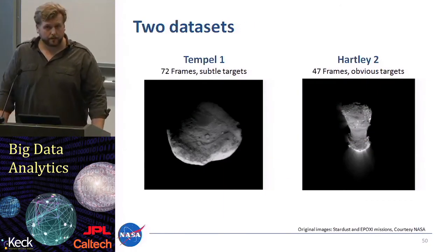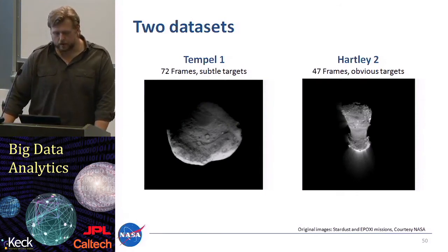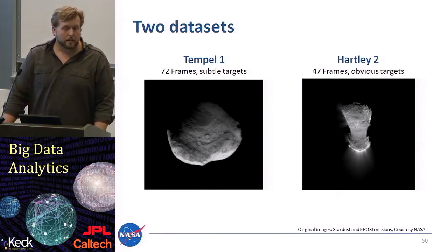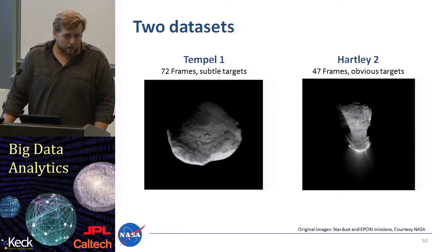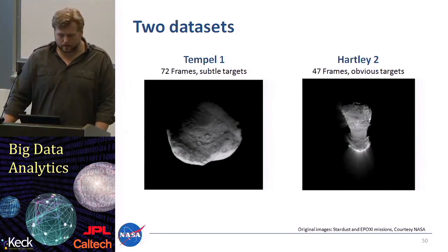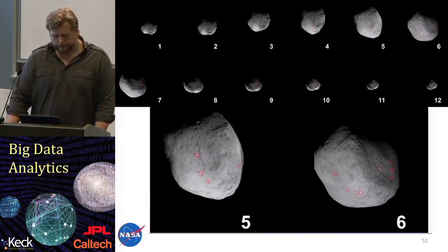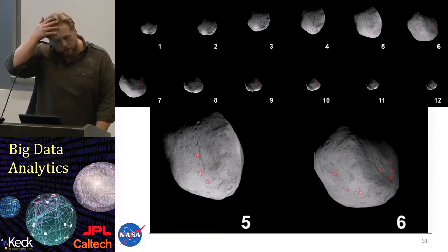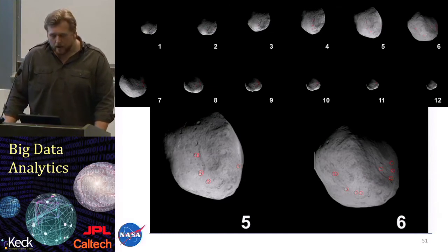We tested on two different flyby missions: one was the flyby at Temple 1, where we had 72 frames, and one was Hartley 2, where we had 47 frames. On the right side for Hartley 2 you can actually also see the coma of the comet — the outgassing at the bottom — so we want a method which does not respond to those bright areas but actually measures features on the comet itself. In the Temple 1 flyby images, red circles show the domain-expert labels — the features of interest are very faint in this case.